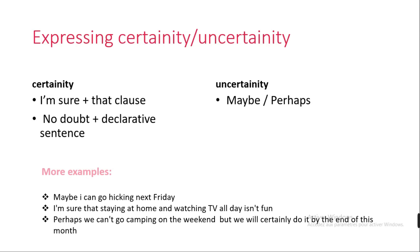Now let's look at expressing certainty and uncertainty. To express certainty, we use 'I'm sure' plus a that-clause, or 'no doubt' plus a declarative sentence. For uncertainty, we use 'maybe' or 'perhaps.' Examples: 'Maybe I can go hiking next Friday.' 'I'm sure that staying at home and watching TV all day isn't fun.' 'Perhaps we can't go camping on the weekend, but we will certainly do it by the end of this month.'